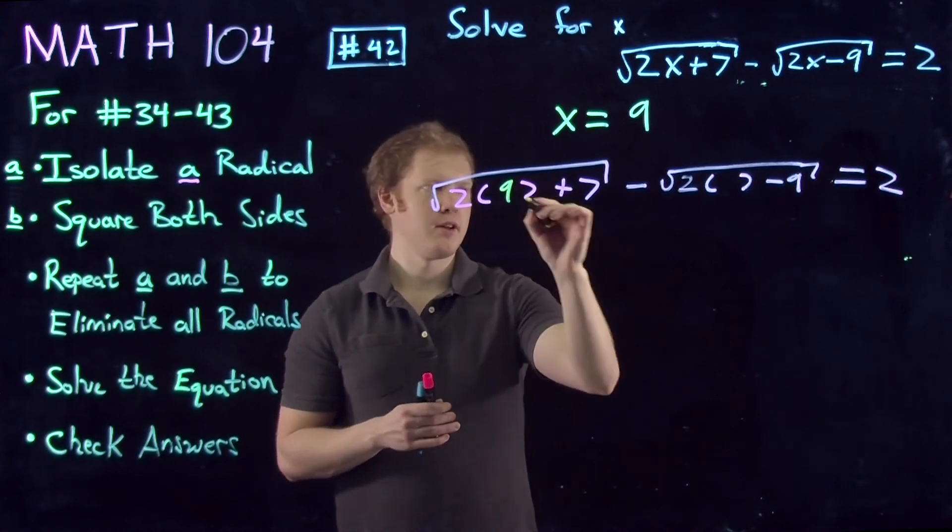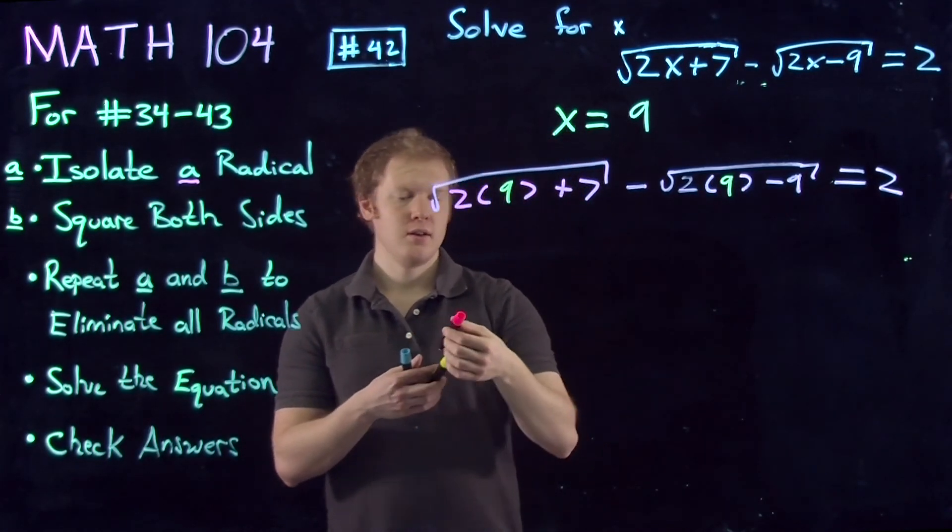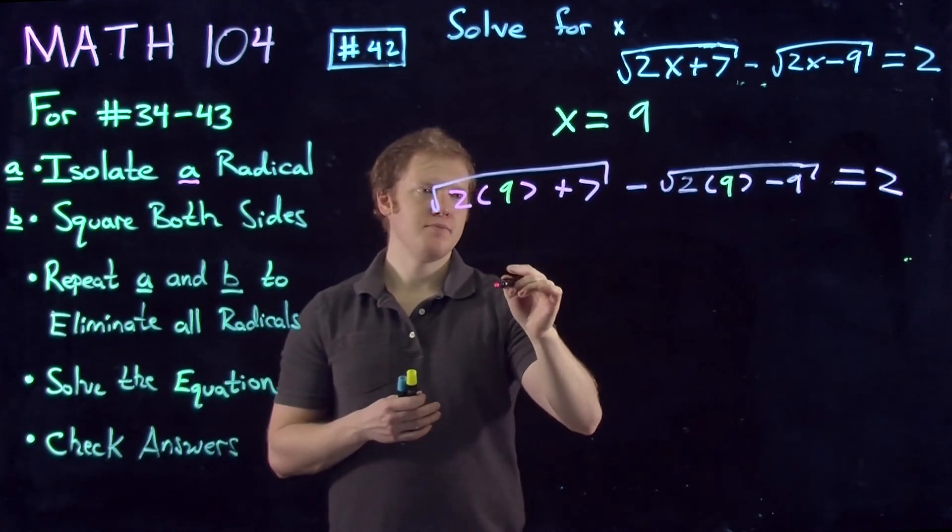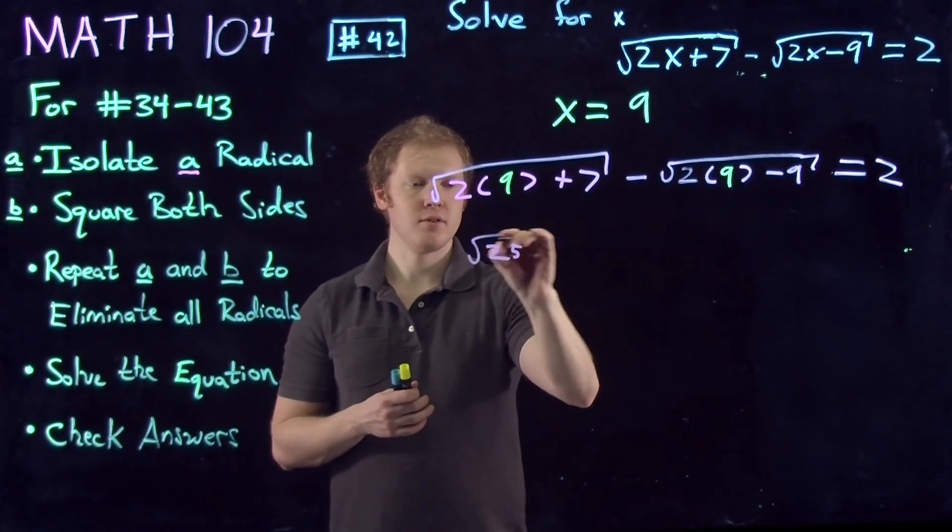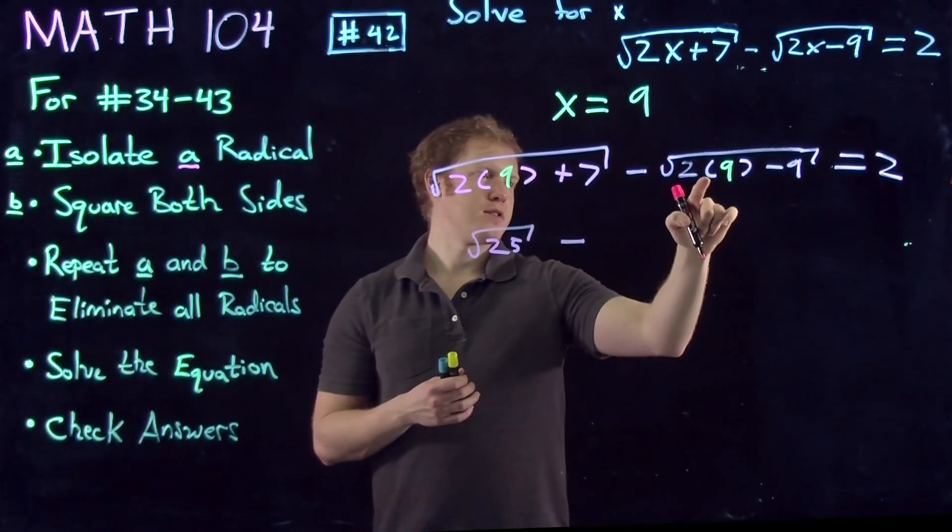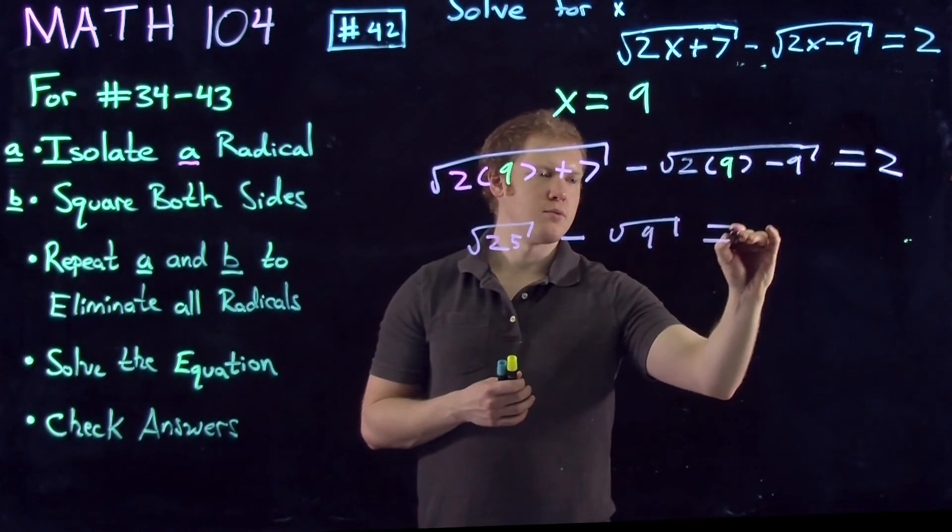If we plug in 9 for both of these expressions, we get the square root of 18 plus 7, which is 25, minus the square root of 18 minus 9, which is the square root of 9, equals 2.